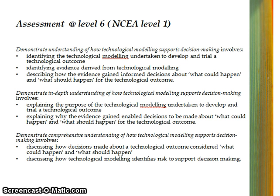Assessment is quite specific. Here are the criteria at level 6, NCA level 1, where students have to identify the modelling undertaken, they have to identify the evidence, and describe how the evidence informed decisions about the could and should — i.e. technical feasibility and social acceptability. And then it steps up to looking at that through an explained mode, and then discussing. So students, in terms of literacy, will need to be able to differentiate between identification, explanation, and discussion.